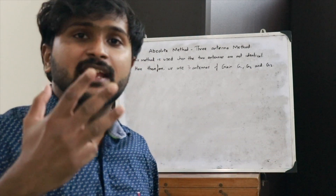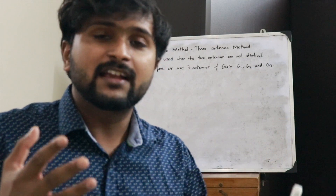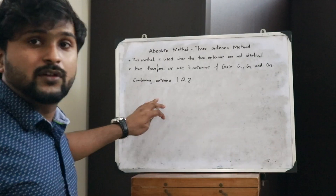After considering three antennas, we compare the first and second antenna using the Friis equation, then we compare the second and third antenna using the Friis equation, and finally we compute the combination of the first and third antenna using the Friis equation.